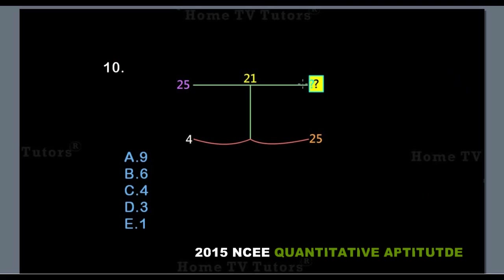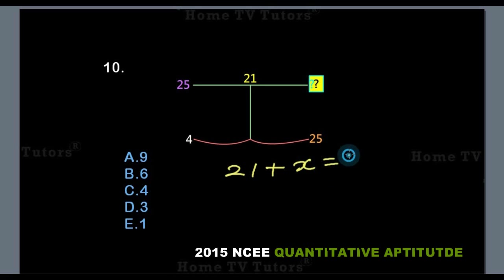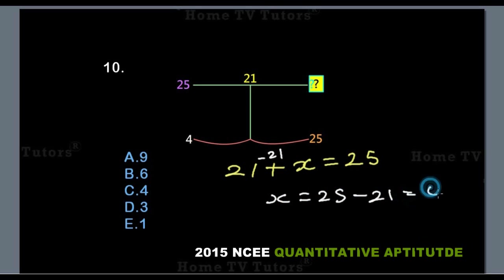Now the missing number is on the top right. Remember, we added this number to this number and it swings down to give us the number at the bottom. So 21 plus X equals 25. Subtracting 21 from both sides: X equals 25 minus 21, which gives us 4, the missing number. The answer option C is the right answer.